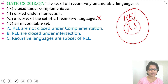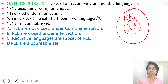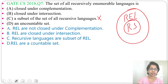Option D: an uncountable set. Recursive enumerable languages are a countable set. The set of all languages is uncountable, but the set of all recursive enumerable languages is countable. Even the set of regular languages is countable, the set of context-free languages is countable. The set of all languages is uncountable, that's why option D is false.